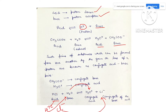When HCl dissociates, it gives the H positive ion, so it is an acid. According to Bronsted-Lowry, the species which donates the proton is the acid and the species which accepts the proton is the base. Here water accepts the proton, therefore it is the base. So acid is the one which donates the proton and base is the one which accepts the proton.